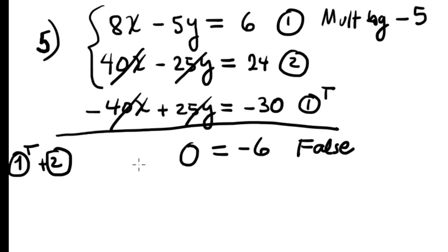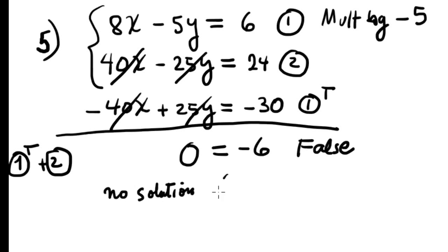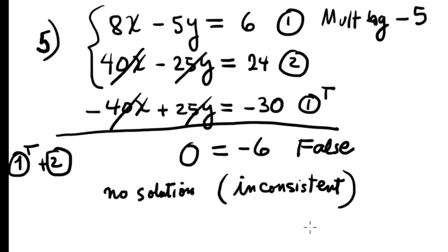The interpretation is that the system has no solution. Therefore the system is inconsistent, corresponding with the option listed.